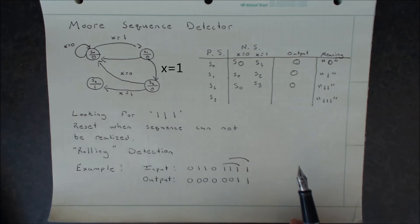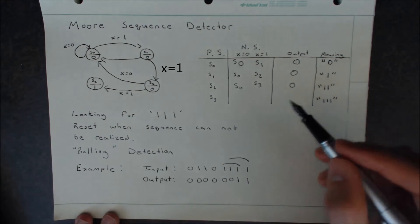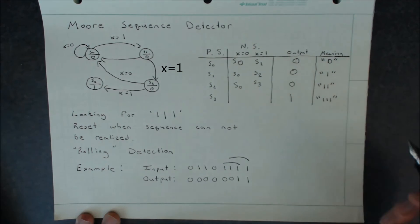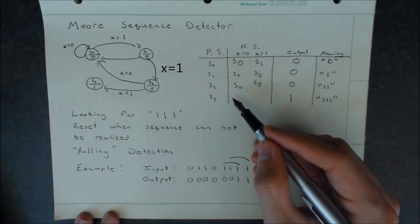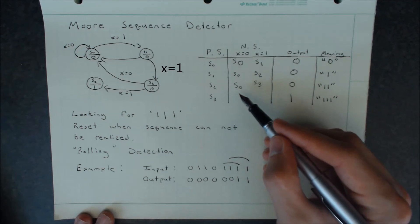Finally, we've reached our last state. In this case, we've received three 1s in a row. Our output we know from looking at S3 will be a 1. And we'll look at what happens when we receive a 0. If we receive a 0, we can no longer reach the sequence 1, 1, 1 again, so we'll reset to S0.